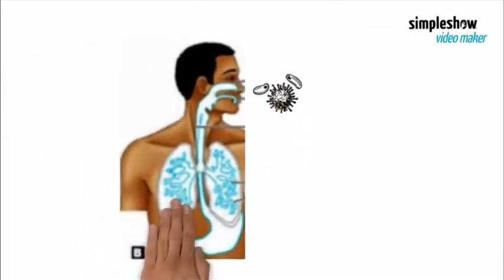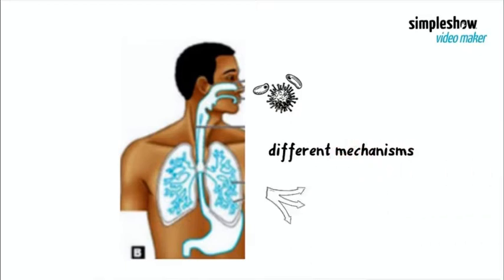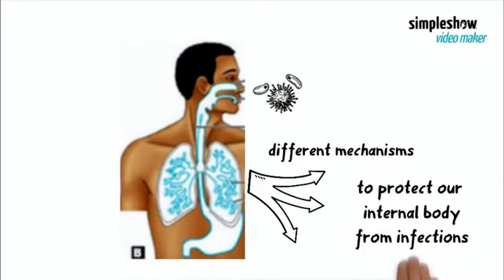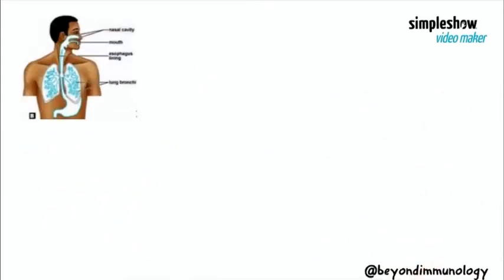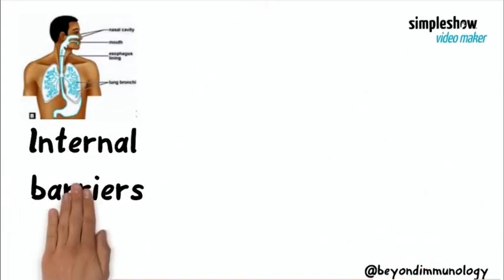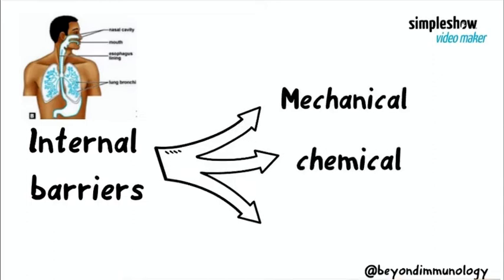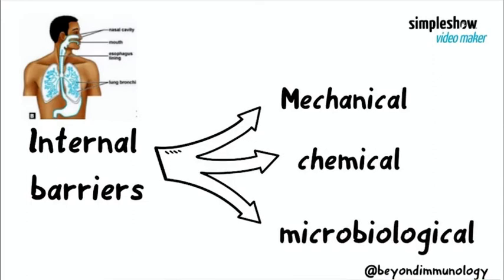Since microorganisms usually enter our body through the internal epithelial surfaces, our internal membranes have different mechanisms to protect themselves from infections. These internal barriers can be categorized into mechanical, chemical, and microbiological barriers.